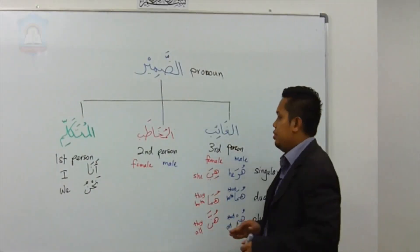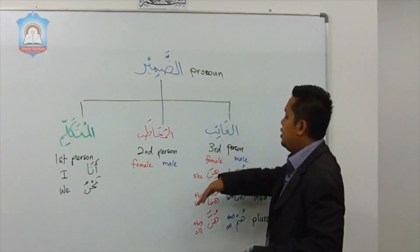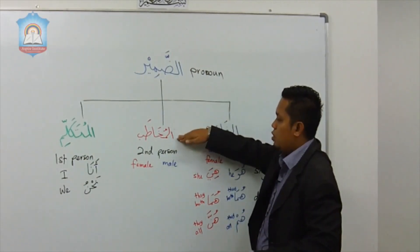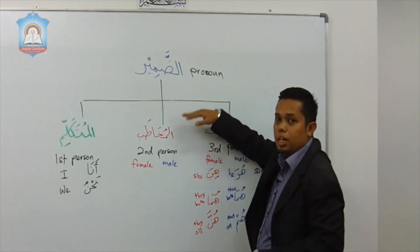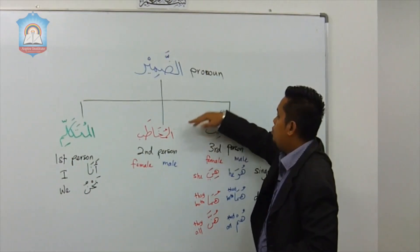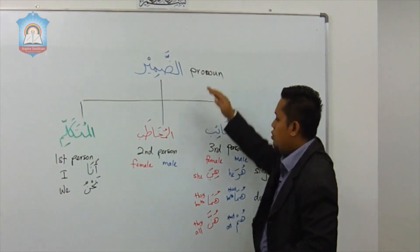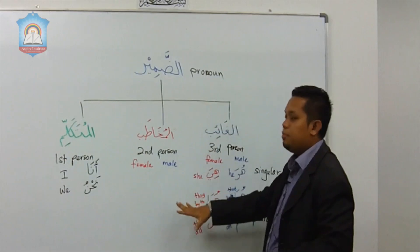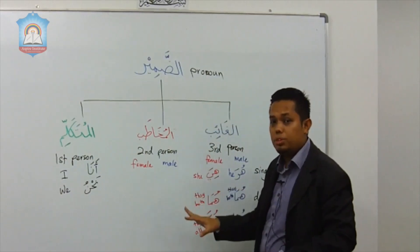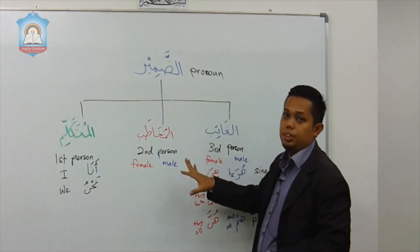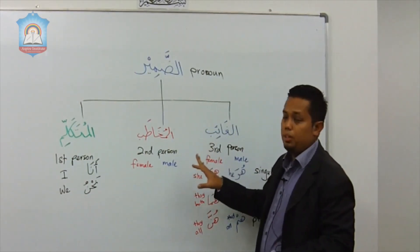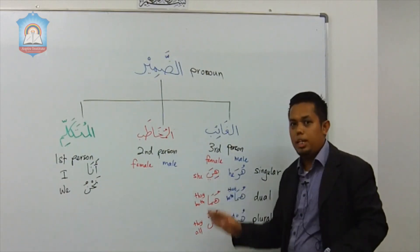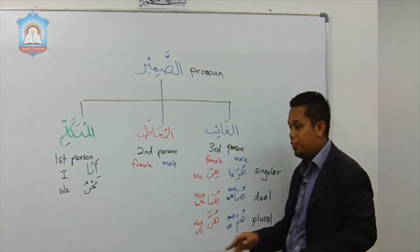In this video, we are covering Dhamir al-Mukhattab. Dhamir al-Mukhattab in English means pronoun for the second person. There are six pronouns for the second person — three for male and three for female.